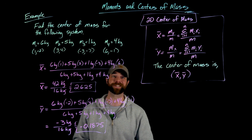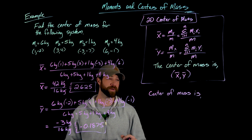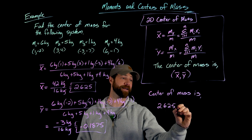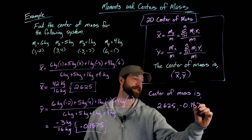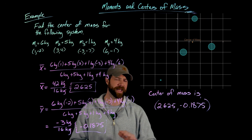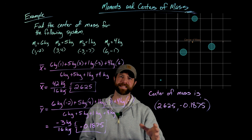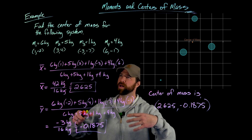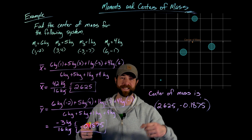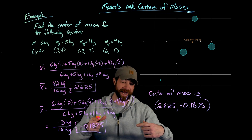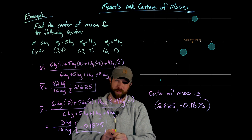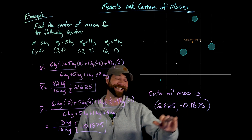So the center of mass is at the point (2.625, −0.1875). To clarify what this means: if we had this system on a plate with an origin point and each of these masses located at their coordinates, and we wanted to balance that plate on something, we would place the fulcrum point at exactly this location.